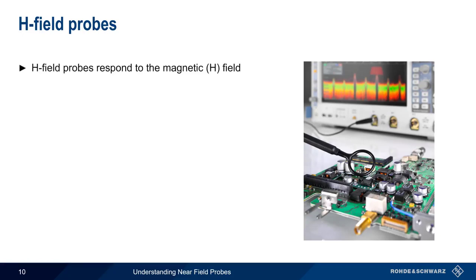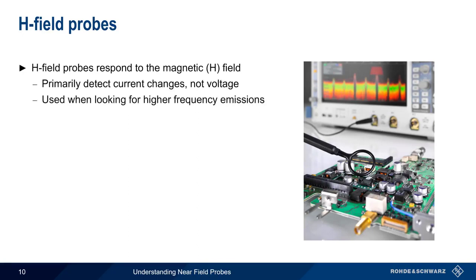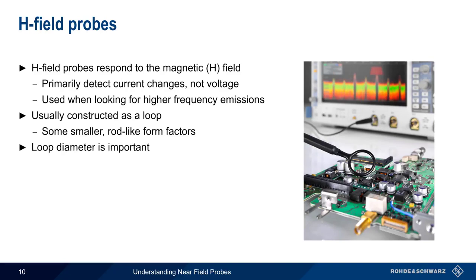H-field probes are designed to respond to the magnetic or H-field. This means that they're primarily used to detect current changes rather than voltages, and thus are more useful when looking for higher frequency emissions. Almost all H-field probes are constructed in the form of a loop, although smaller, rod-like form factors are sometimes also used. As we'll cover in more detail shortly, the diameter of the loop is very important.